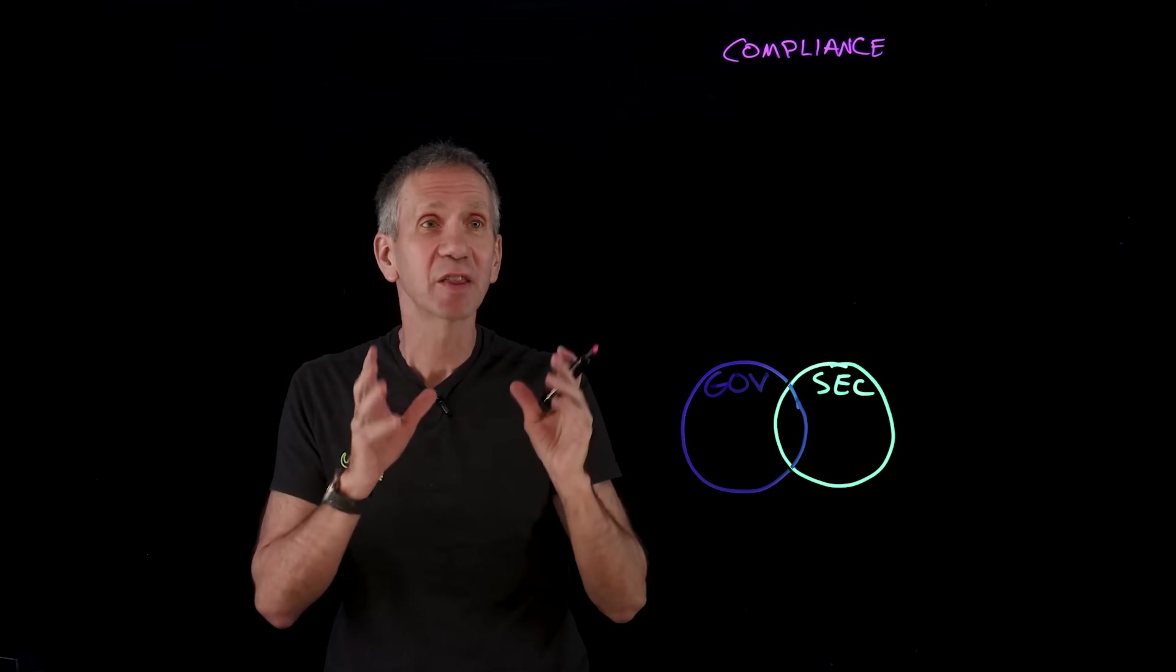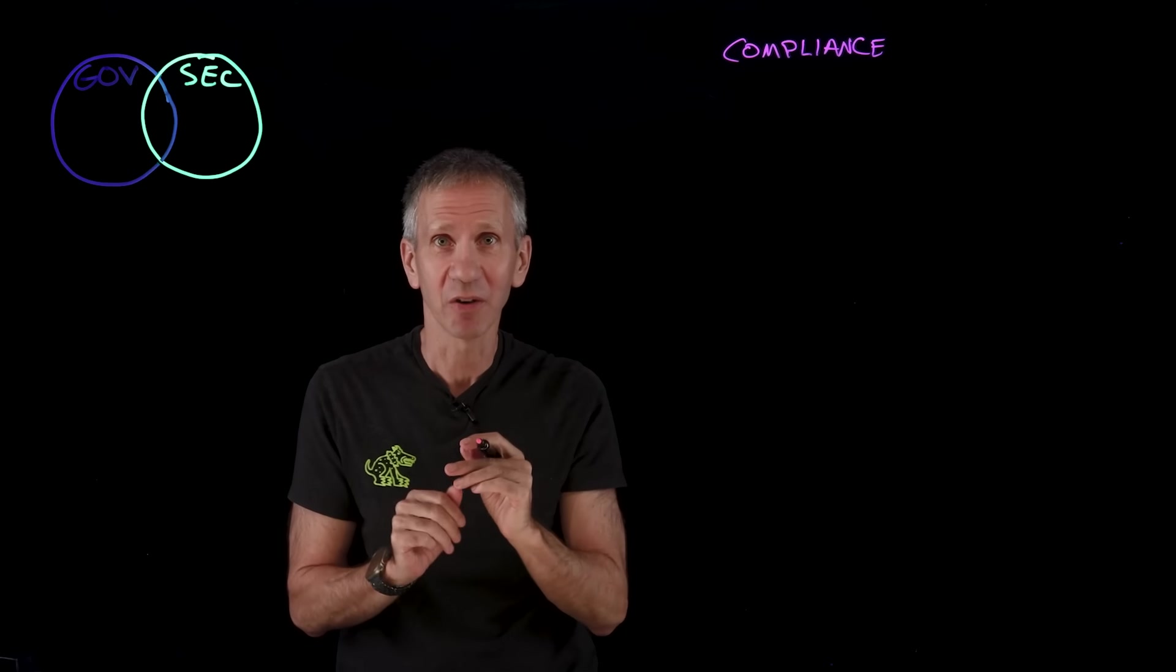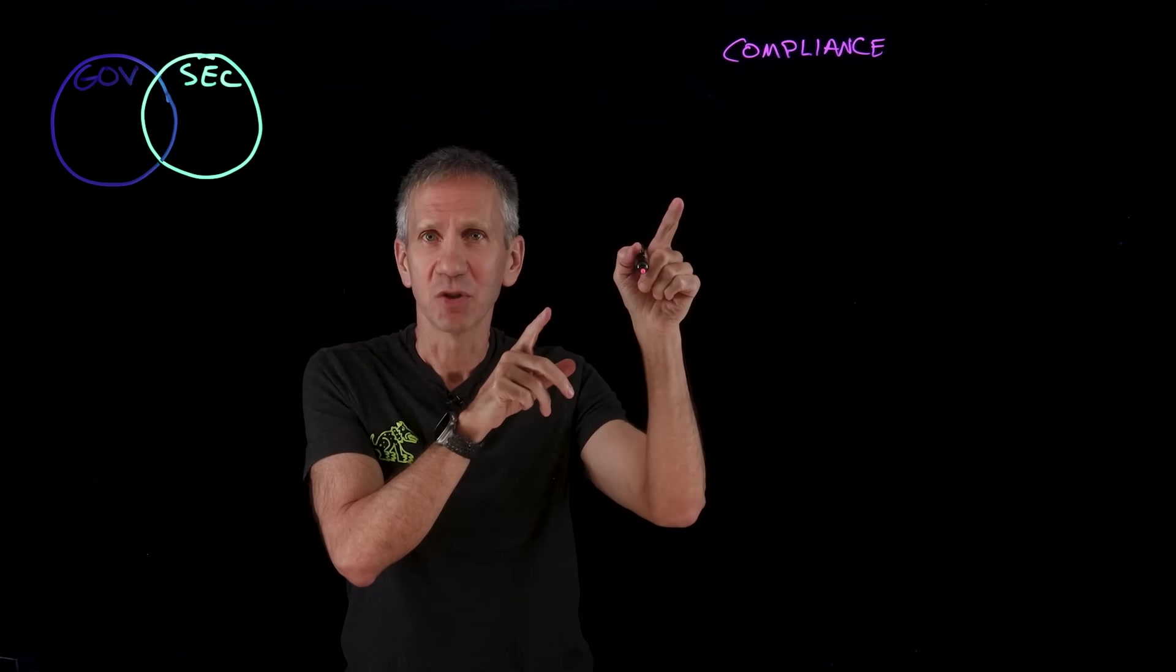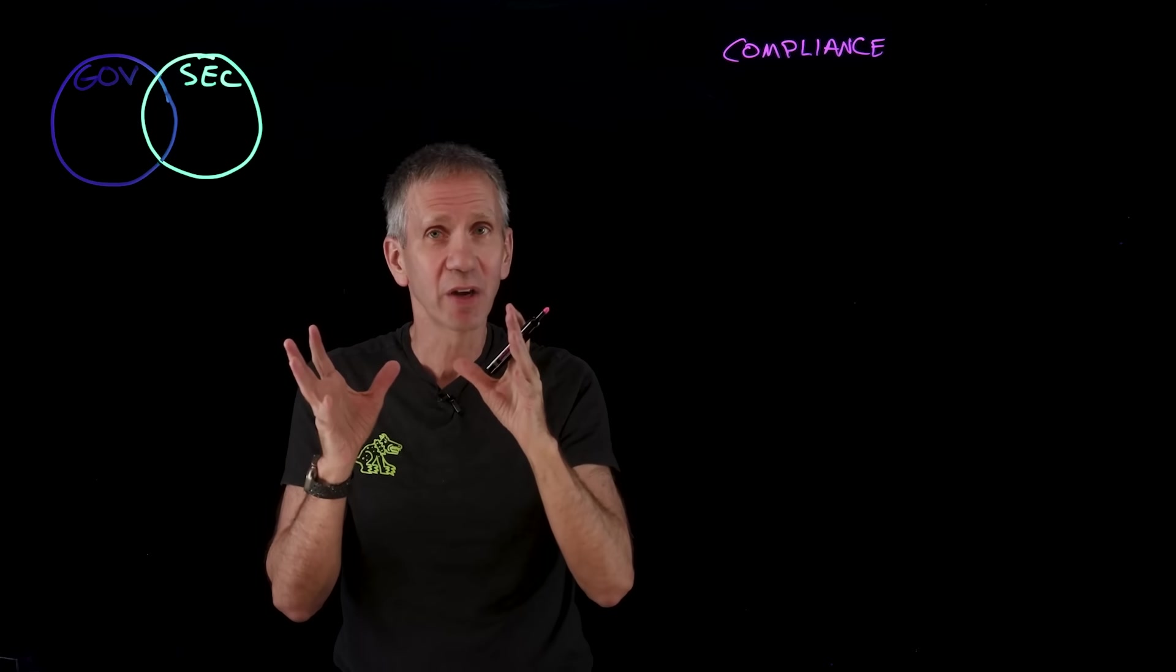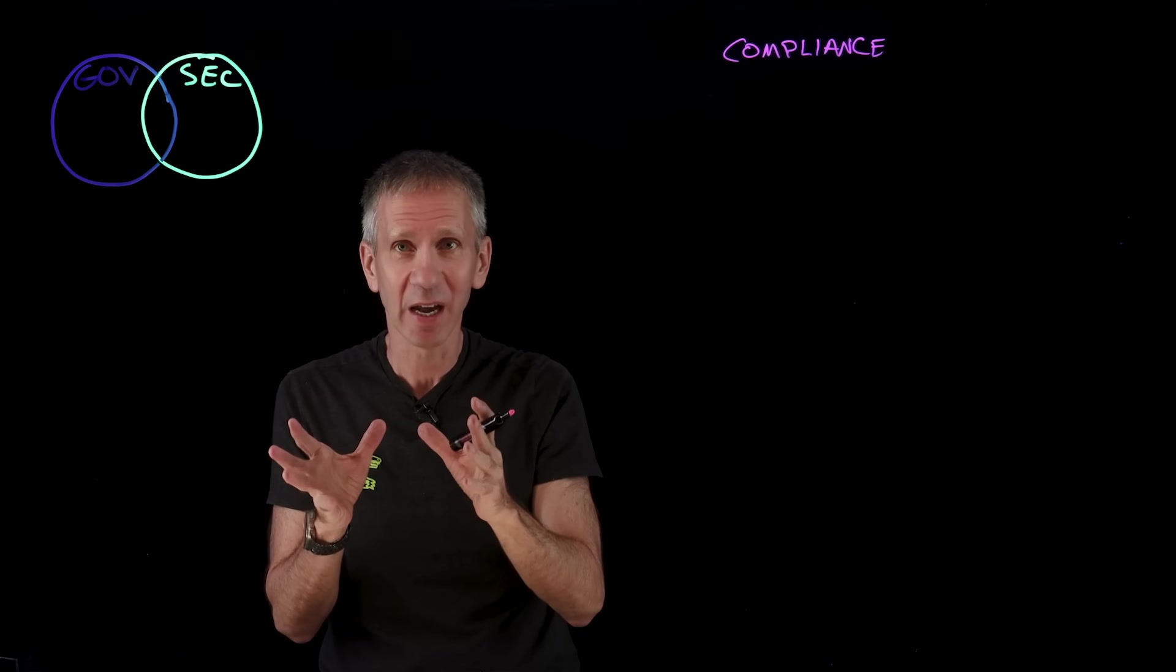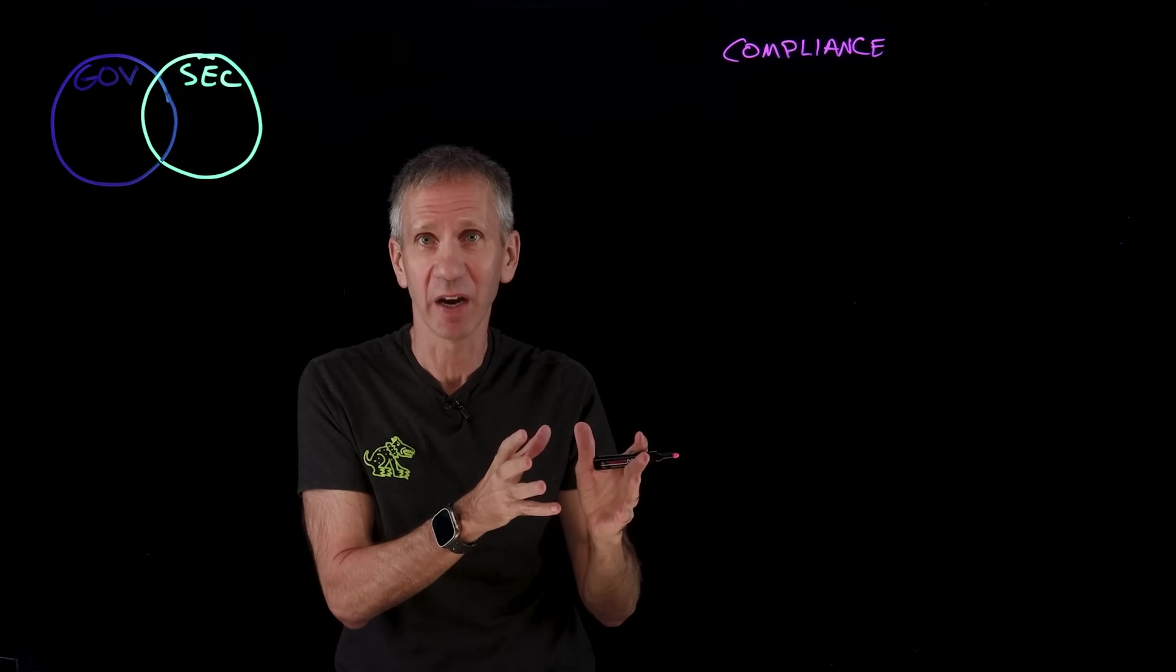Let's take a look at the problem space. First of all, we're going to look at compliance issues. In theory, you should have a governance policy for AI, and you should have a security policy for AI.